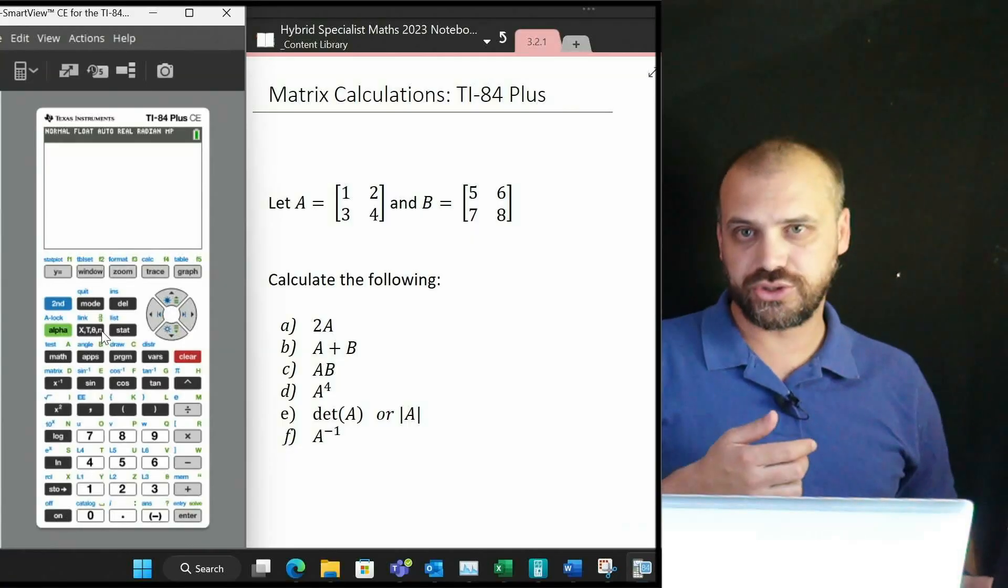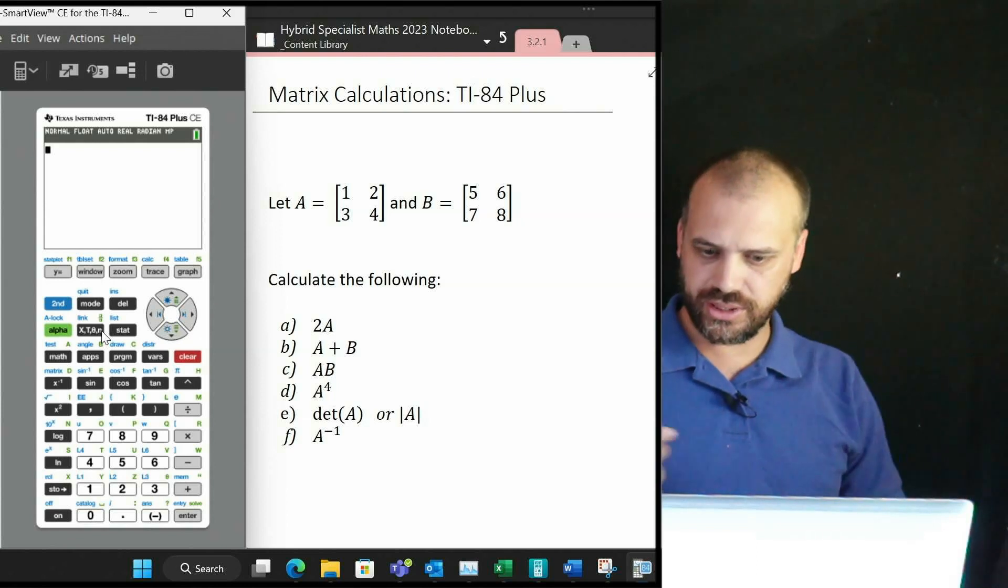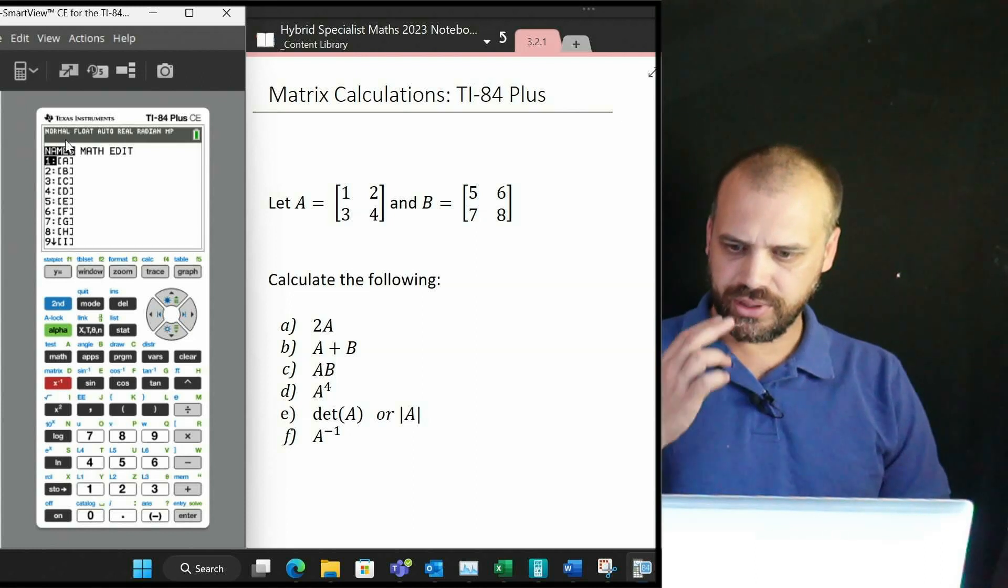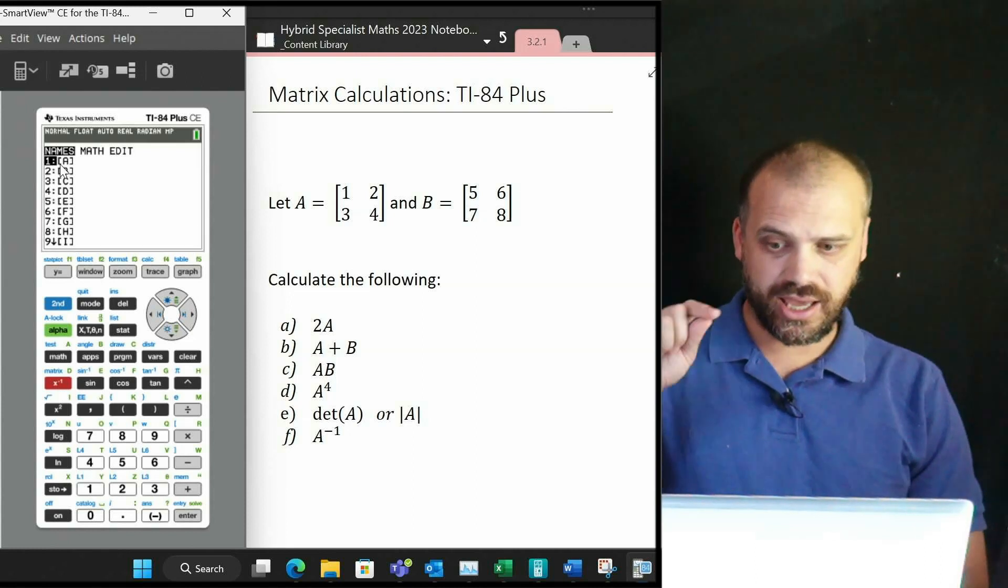Matrices are awesome but they can get big and difficult to calculate, so just use your calculator. That's what we're going to be doing here. The way to do it: second function into the matrix, and we're going to put a matrix in for A and B.